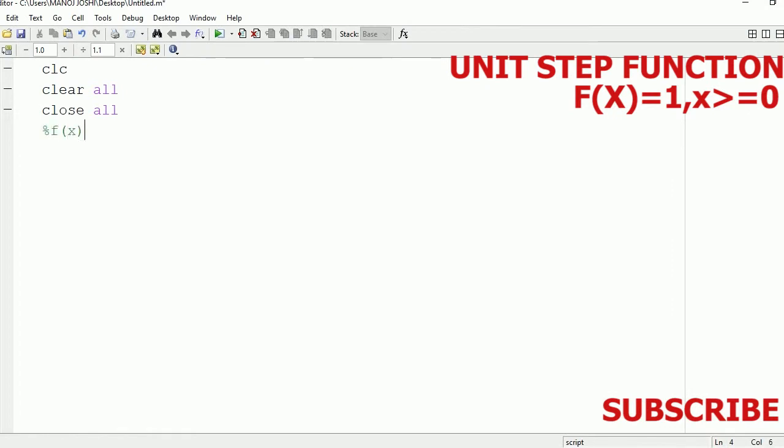In order to write the comment, you need to make use of the modulus command. So we are writing the comments: modulus f(x) equal to 0 for x less than 0 - this is the first condition. The second condition is that f(x) equal to 1 for x greater than or equal to 1.